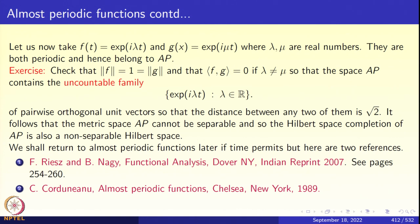If you have an uncountable collection of pairwise orthogonal unit vectors, the distance between any two of them is root 2 by Pythagoras' theorem. Taking a ball of radius root 2 over 3 around each element of this uncountable family gives an uncountable collection of pairwise disjoint balls, so obviously this will not have a countable sub-cover. For a metric space, second countability and separability are equivalent, so this family is not second countable and hence not separable.